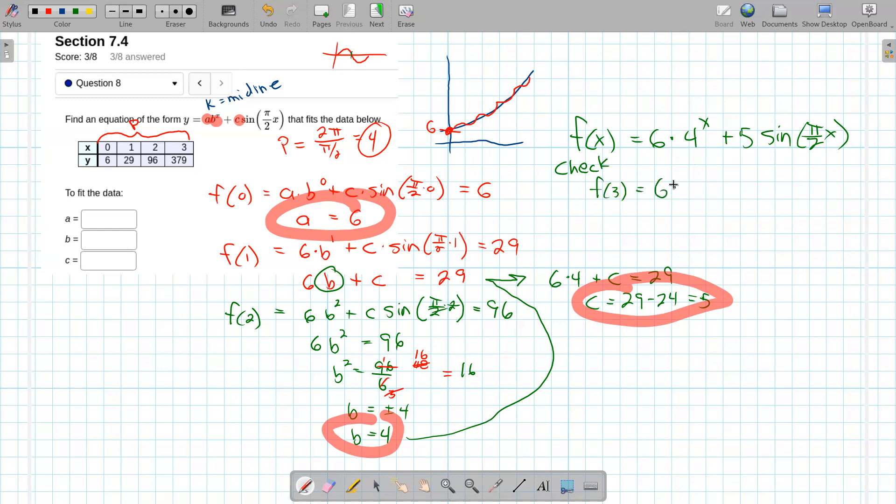So we're going to have 6 times 4 cubed plus 5 times the sine of π over 2 times 3. And let's see, the sine of 3π over 2. So 1π over 2, 2π over 3π over 2, that's negative 1. So that's 6 times 4 cubed. 5 times negative 1 minus 5. 4 cubed is what? Like 256-ish, maybe. Let's check on the calculator.